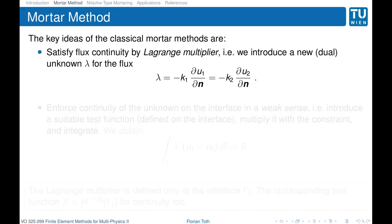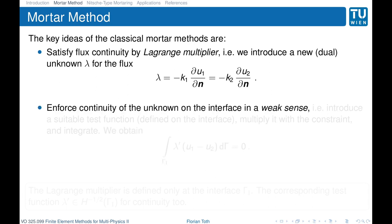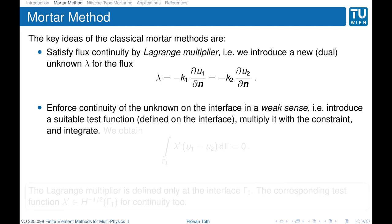Now let's go into the mortar method. The key idea is that we satisfy the flux continuity by a Lagrange multiplier. We introduce a new dual unknown lambda for the flux, so lambda is equal to the flux, and by convention we take the minus sign here. As our interface condition states, the fluxes must be the same on both sides of the interface. The second condition is continuity of the unknown, which will be enforced in a weak sense. As with the weak form, we introduce a suitable test function defined on the interface, multiply it with our constraint, and integrate. This gives the integral over the coupling surface gamma i of the test function lambda-prime times u1 minus u2.